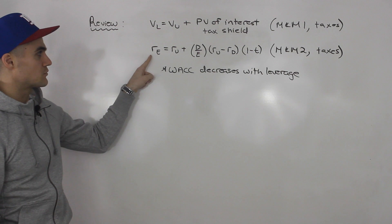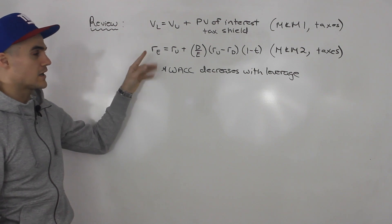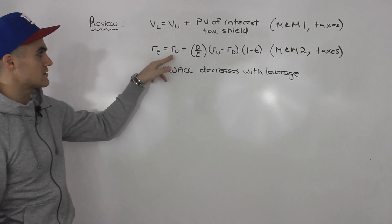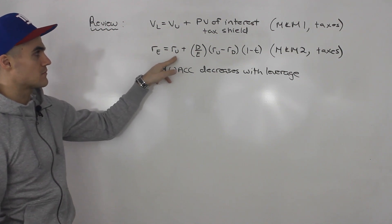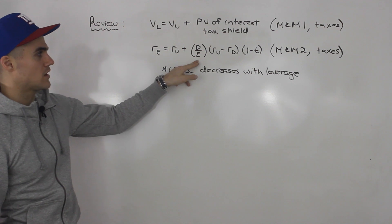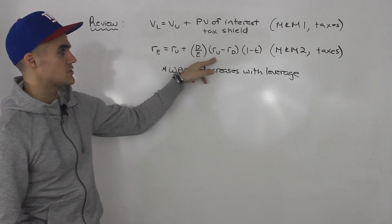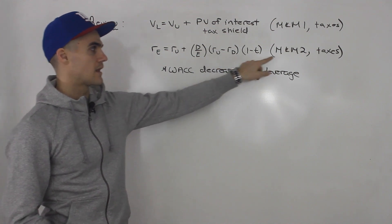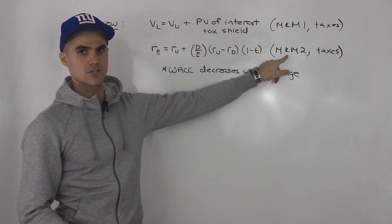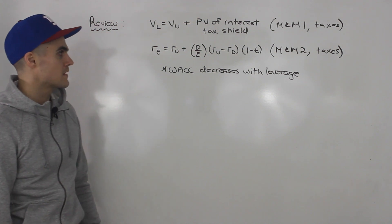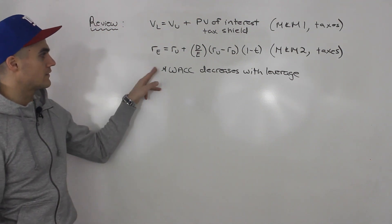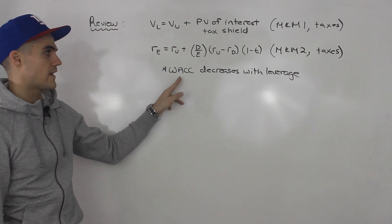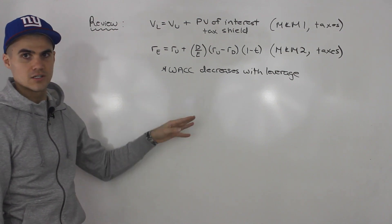In the last video, we mentioned that the return on equity for a firm increases with leverage. It's the return of an unlevered firm plus the debt-to-equity ratio times the difference between the unlevered cost of capital and cost of debt, times one minus T. That is M&M proposition two with taxes. We also found that the more leverage a company takes on, the weighted average cost of capital decreases.